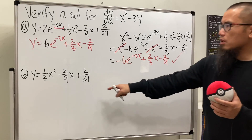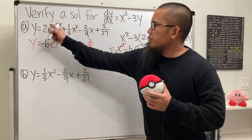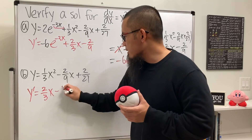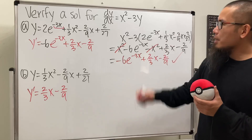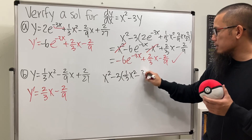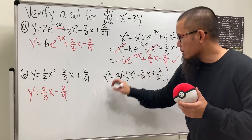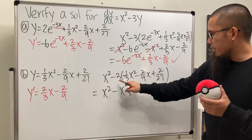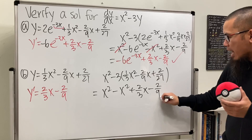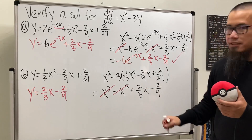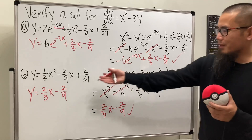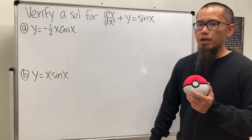For the second choice, which lacks the exponential part, y = (1/3)x² - (2/9)x + (2/27). Then y prime = (2/3)x - (2/9). Checking the right-hand side: x² - 3·((1/3)x² - (2/9)x + (2/27)) = x² - x² + (2/3)x - (2/9) = (2/3)x - (2/9). This matches y prime, so this one is also a solution.